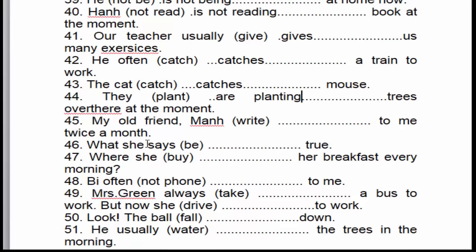Câu số 45: 'My old friend Manh writes to me twice a month.' Bạn cũ của tôi — bạn Mạnh — viết thư cho tôi hai lần một tháng. Cứ hai lần bạn ấy viết thư cho tôi một tháng. Sự việc như vậy mà thôi, cho nên chúng ta chia thì hiện tại đơn. 'Manh' là chủ ngữ số ít, động từ 'write' chúng ta thêm 's' → 'writes'.